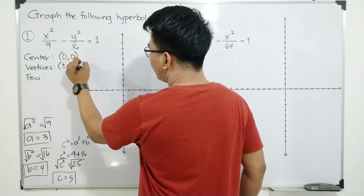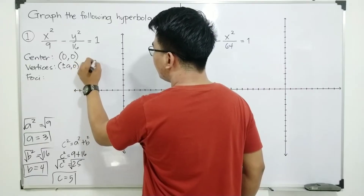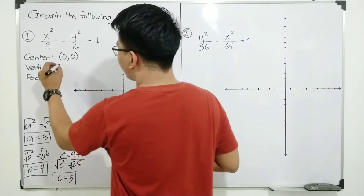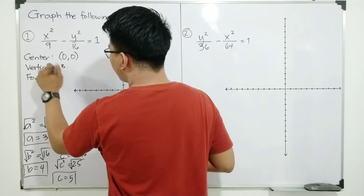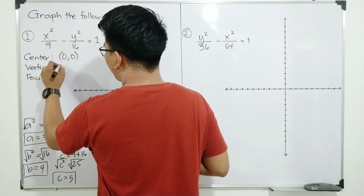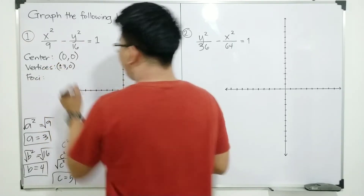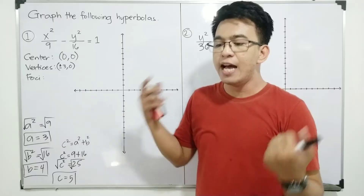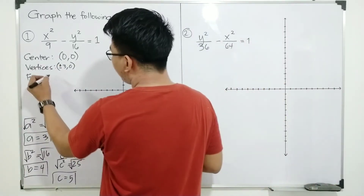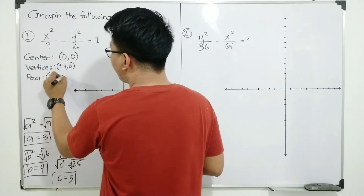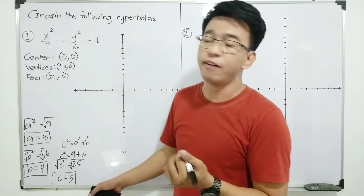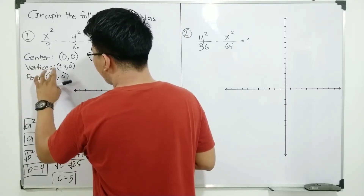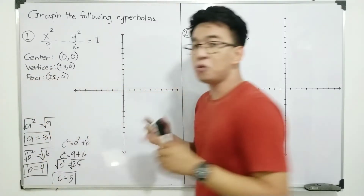Getting the value of a, your vertices are (–3, 0) and (3, 0) — two counts, guys. One is (3, 0) and the other is (–3, 0). And as for the foci, the general pattern here is (±c, 0). The value of our c is 5, therefore our foci are (–5, 0) and (5, 0) — again, two counts.